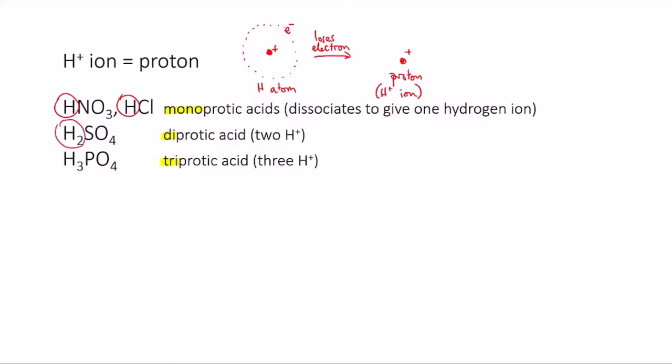Sulfuric acid is a diprotic acid, and phosphoric acid is a triprotic acid. It releases three hydrogen ions.